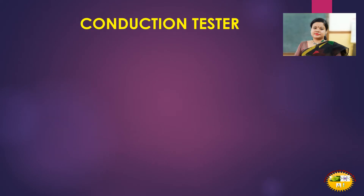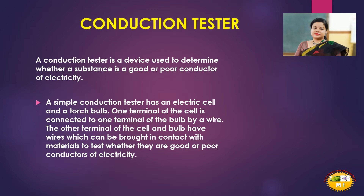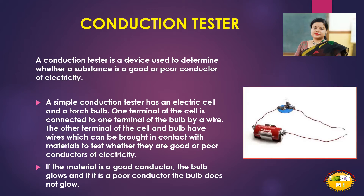Now, we want to know whether a given substance or solution can conduct electricity. For that, we need a conduction tester — a device used to determine whether a substance is a good or poor conductor of electricity. A simple conduction tester has an electric cell and a torch bulb. One terminal of the cell is connected to one terminal of the bulb by a wire, and the other terminals have wires that can be brought in contact with the material to test. If the material is a good conductor, the bulb glows; if it is a poor conductor, the bulb does not glow.